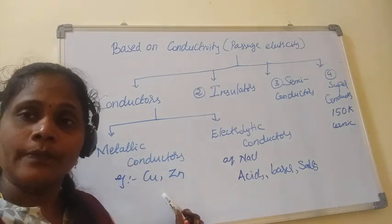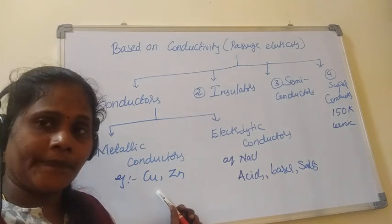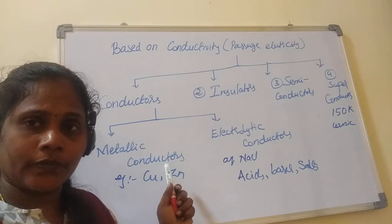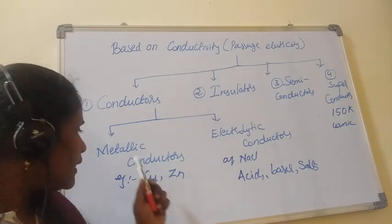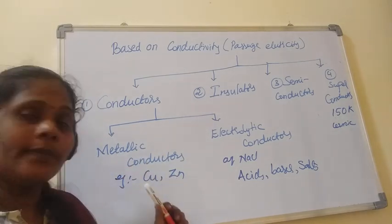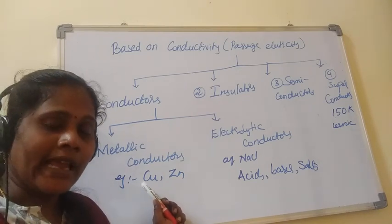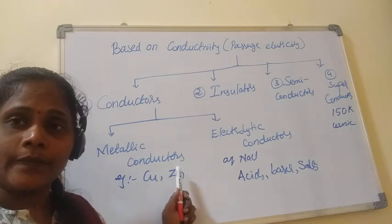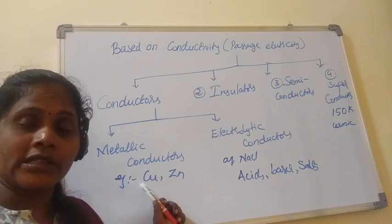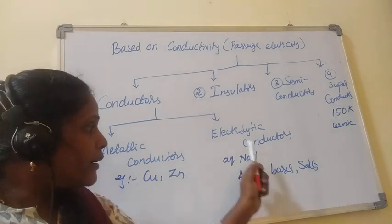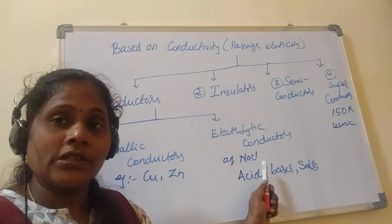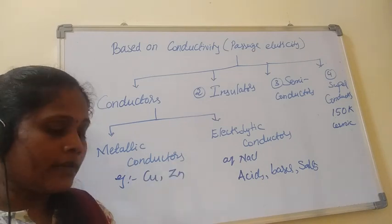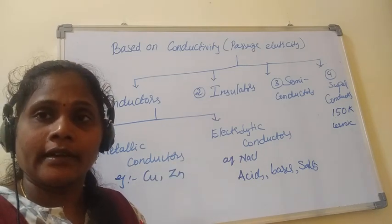All metals which show passage of electricity through them are called metallic conductors. There is a lot of difference between metallic and electrolytic conductors. In metallic conductors, metals are involved — and in metals, the flow of electrons is electricity. So electrons are transferred; there are no ions, and mass is not changed. Here in electrolytic conductors, ions are transferred, therefore mass is changed.